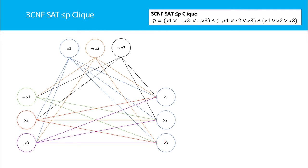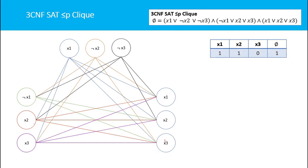This is how we convert a 3CNF-SAT equation to a graph. Now I have to check whether the graph has a clique. We have three clauses, so by looking at the graph we can say the graph will definitely have a clique of size 3. Suppose x1=1, x2=1, and x3=0 — this equation is satisfiable and the output will be 1.